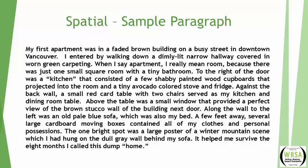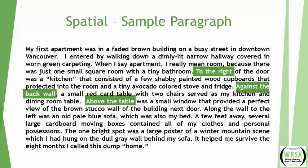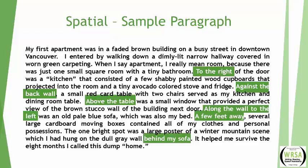If this person had just started telling you about the table, then the poster, then the brown rug, then the window, it would be pretty confusing. But because the writer oriented you first and then moved around the whole room in an organized way, you get an idea of what the room looks like. The spatial transitions — to the right, against the back wall, above the table, along the wall, behind — show the relationships between things and help you see where one thing is in relation to another.